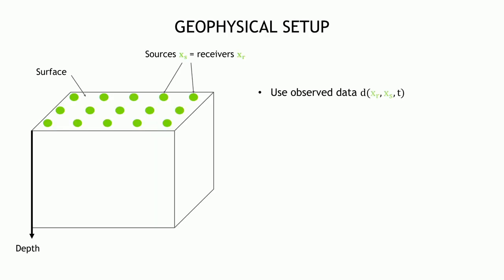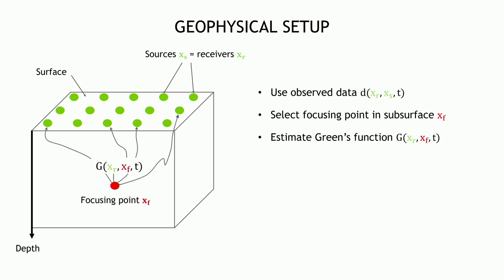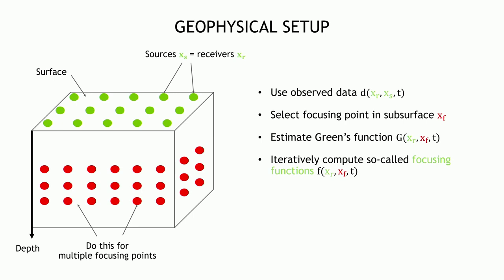We have the surface of the earth with a dense carpet of co-located sources and receivers. We select a subsurface point xf, and the goal is to retrieve the Green's function — as if that focusing point were a source or a receiver. This is done by an iterative process where we compute iteratively the so-called focusing function, which depends on subsurface point xf, on the surface point, and on time. We do this for many focusing points.